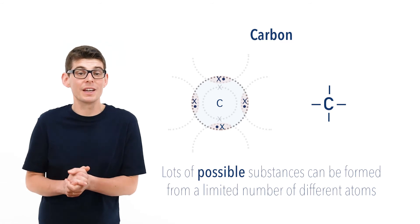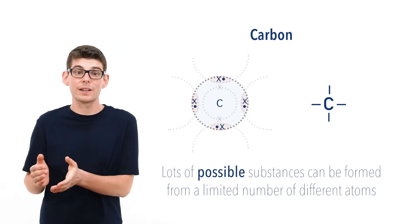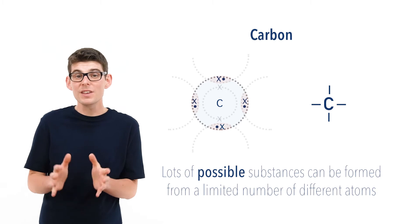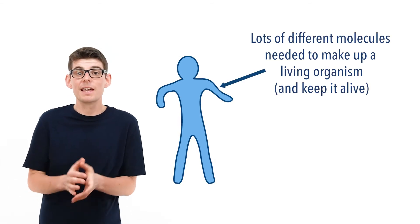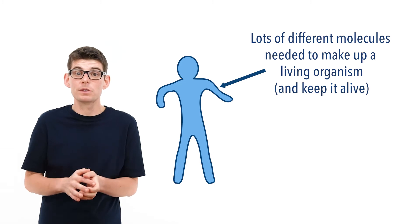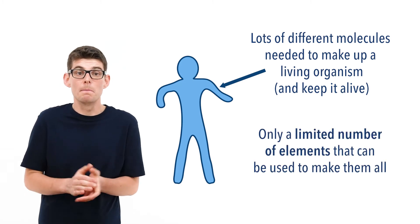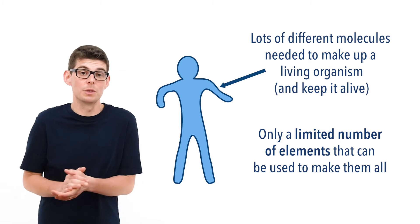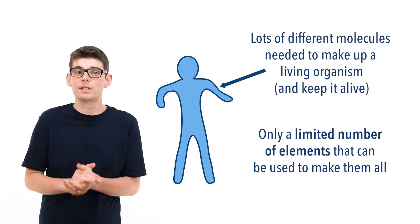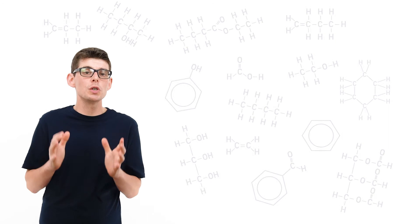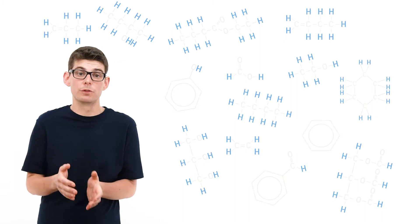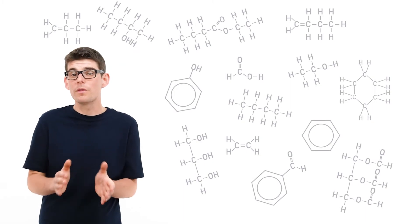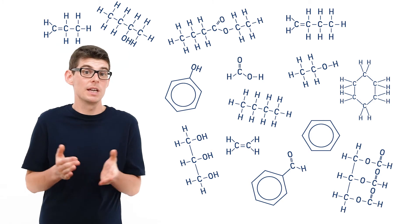In fact, over 98% of known substances are organic. This is useful in nature, as to make a living thing — including you and I — we need loads of different molecules, and yet there is only a limited number of different elements that can be used to make them, many of which are too reactive or unstable to be much use anyway. Carbon's ability to make four bonds means a huge variety of molecules can be made from the same starting elements, most commonly carbon, hydrogen, and oxygen, although there are many organic compounds that contain other elements as well.